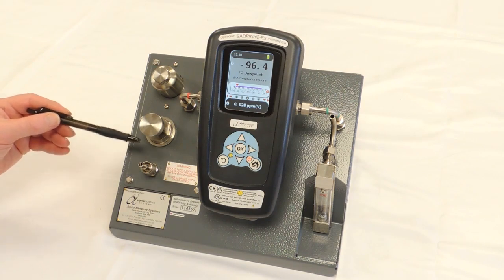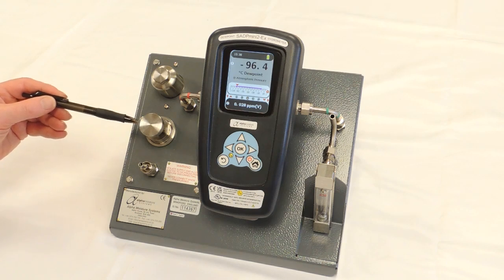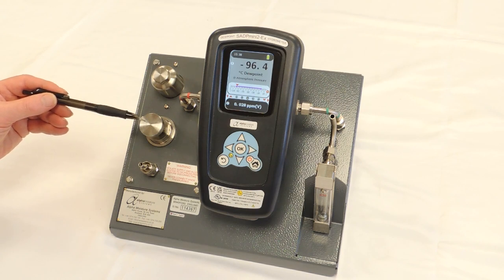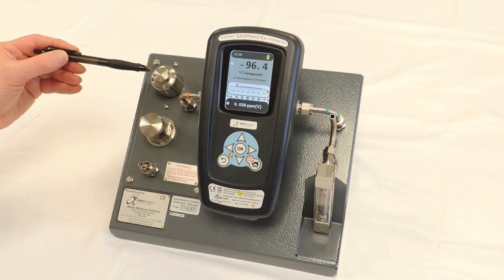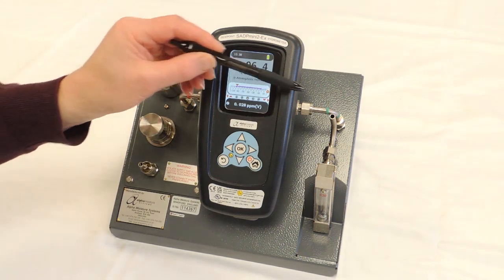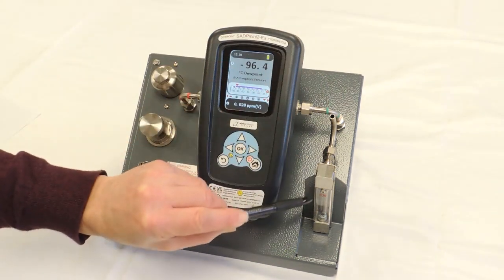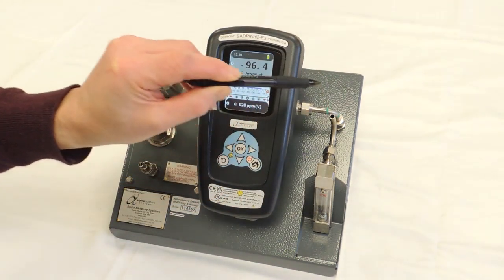From the quick connect, we go to an inlet pressure regulator which allows the pressure to be regulated down to the required pressure for the SADP Mini 2 which is less than 0.3 of a bar G. Then there's a particle filter. Then we go through the instrument, out the instrument, through a flow indicator and then out the exit pipe.